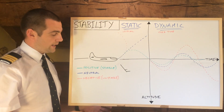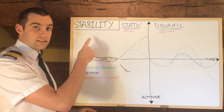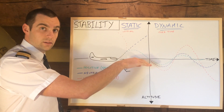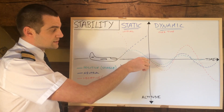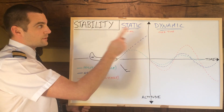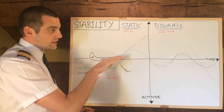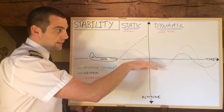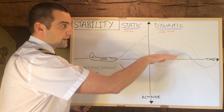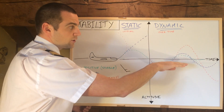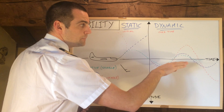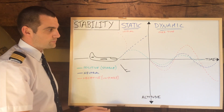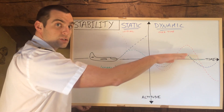In this first example, the aircraft has positive static stability, so it has an initial tendency to come back. And let's say it has positive dynamic stability — in which case it will pitch down initially to counteract the pitch up, then pitch back up, then pitch back down, and the oscillations will get smaller and smaller until it comes back onto its original flight path by itself.